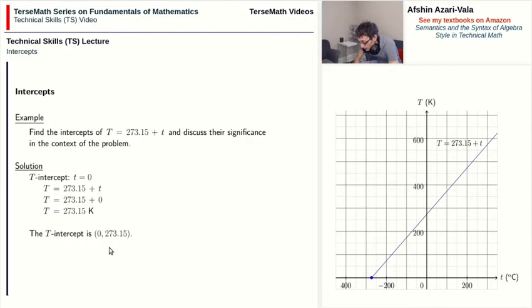Again, the intercept is a point, so you should give both coordinates for that point. It's not a number. 273.15 here is not the intercept. The point with coordinates zero and 273.15 is the intercept. The significance of this intercept is that this is the temperature at which water freezes under standard conditions. You can see that the intercepts almost always point to some kind of significance, some event happening. For that reason, if you're graphing with any graph, you should always pay attention to the intercepts and try to figure out what they represent.